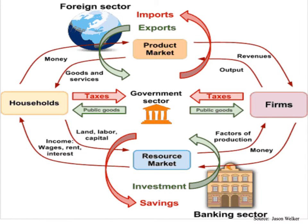Here's another version of the same model from Jason Welker. Here are households, here are firms, here's the product market, here's the resource market. This one is a bit more sophisticated because it includes the banking sector, the foreign sector, and the government sector. This is the circular flow model I use in my other video to talk about how money and resources flow through an economy.